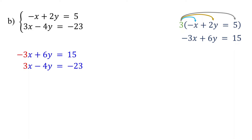Now the coefficients of the x terms are opposites. If we had chosen to eliminate y, we could make the coefficients of y opposites by multiplying the first equation by 2. This would result in 4y in the first equation, which would cancel out with the negative 4y in the second equation when you add them. Regardless of which variable you initially choose to eliminate, you will obtain the same answer in the end.